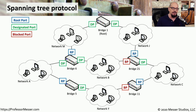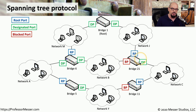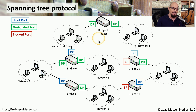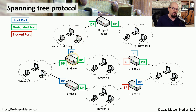Here is a Layer 2 network design with five bridges or switches connecting many different networks. There are many opportunities to create loops — for example, from Network M through Bridge 6, Network B, Bridge 21, Network J, back to Bridge 1, and back to Network M. With Spanning Tree enabled, ports marked BP (blocked port) are administratively disabled to prevent loops. So Network M cannot loop through the network because it is blocked at the interface on Bridge 21.